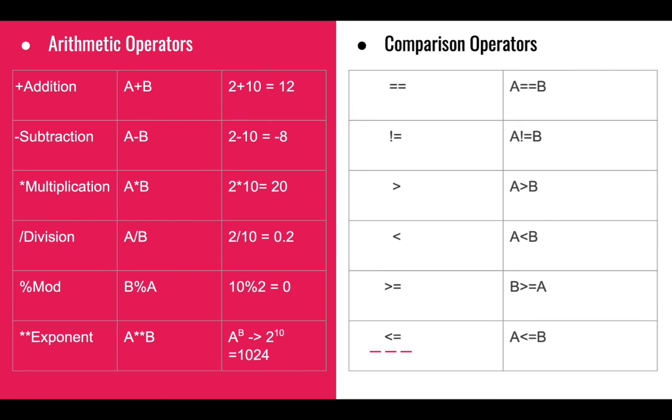Let's talk about the comparison operator. The comparison operator checks the value. Double equal to will find if A is equal to B or not. Not equal to will find A is not equal to B or not. Greater than will find A is greater than B or not, less than finds A is less than B or not, greater than equal to checks B is greater than equal to A or not, and less than equal to checks A is less than equal to B or not.